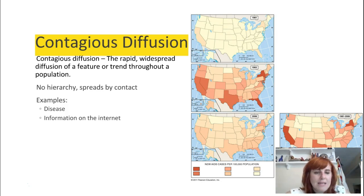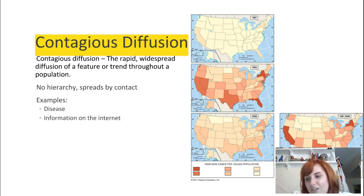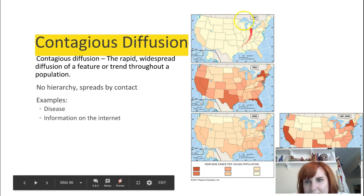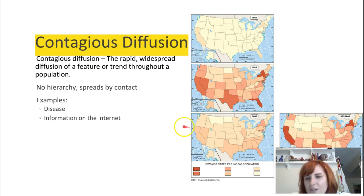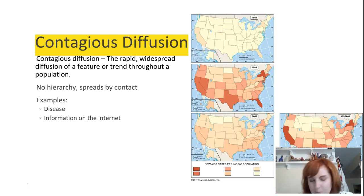Contagious diffusion is when the diffusion is so widespread that it's really hard to determine a hearth. It's so rapid that it can't be any other kind of diffusion — it's contagious, kind of like a cold. Diseases are good examples. These graphics show AIDS cases in 1981, 1993, and 2006 combined, showing how it diffused via contagious diffusion. Information on the internet often goes that way too — sometimes it's hard to find who originally posted something, and overnight everybody has seen a meme or video. Things on the internet spread so quickly that we'd call that contagious diffusion.